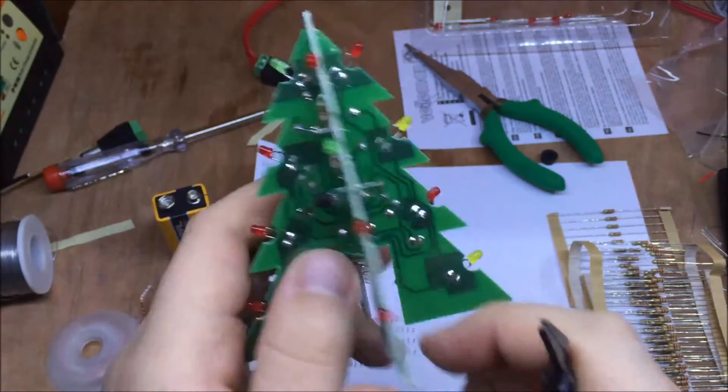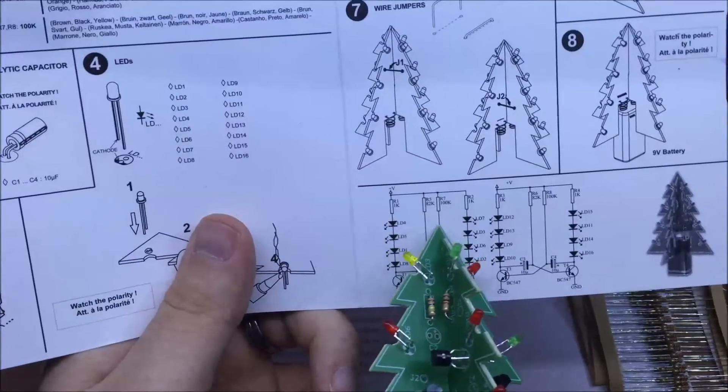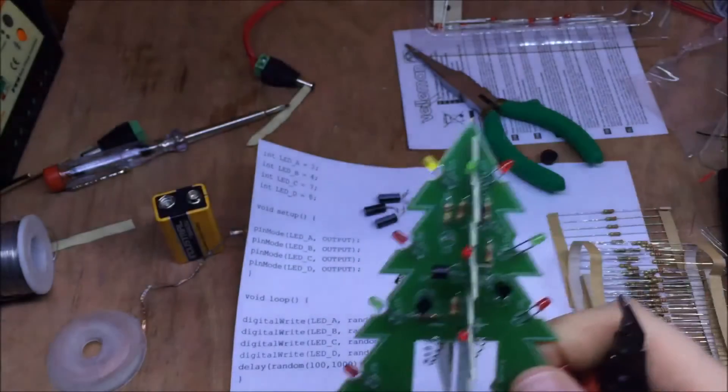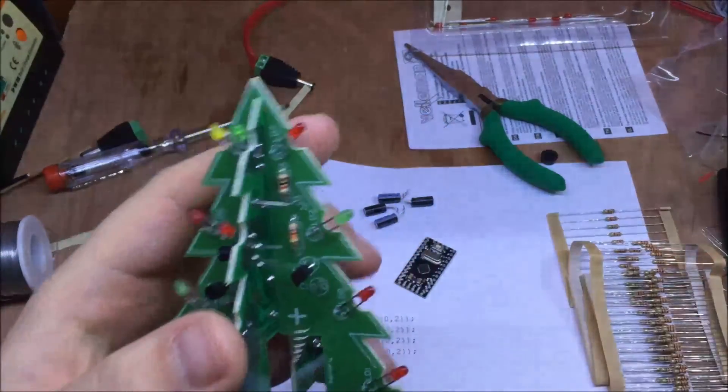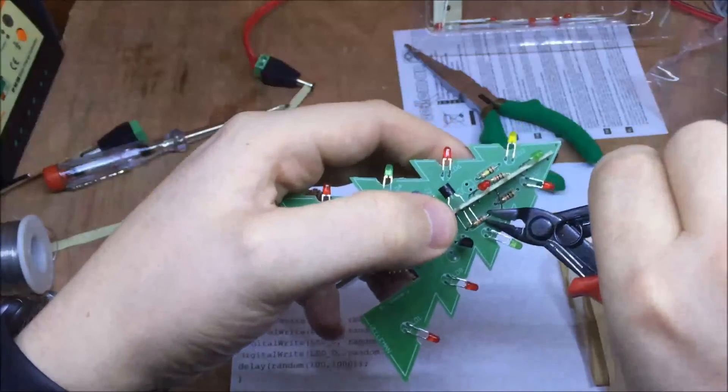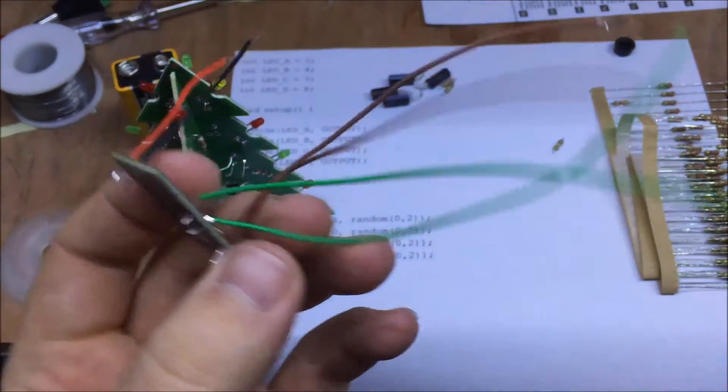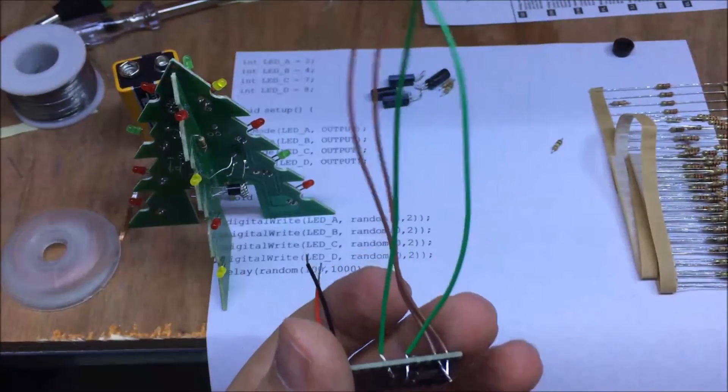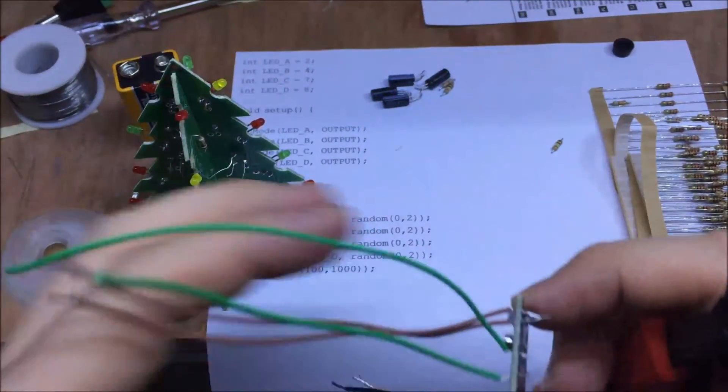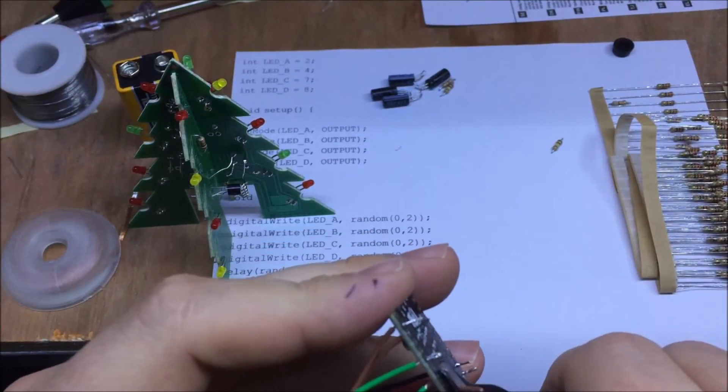Capacitors have been desoldered, and I'm also going to remove these resistors at the top, but I can't be bothered unsoldering those, so I'm just going to cut them out. Okay, so I've gone for green and brown wires, just because you know, they're tree-like, aren't they?